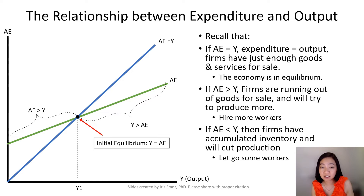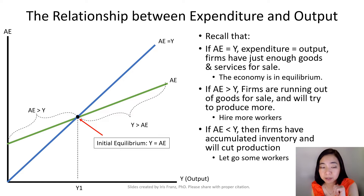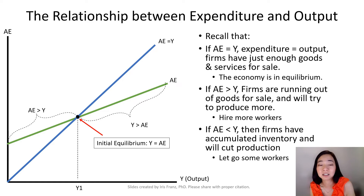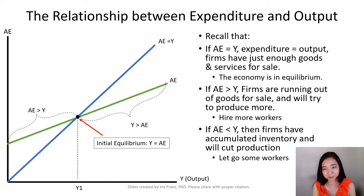On the left-hand side of this aggregate expenditure schedule, notice that aggregate expenditure is greater than the output, meaning our economy is not producing enough stuff for our spending. So at this time, firms would try to produce more by hiring more workers.